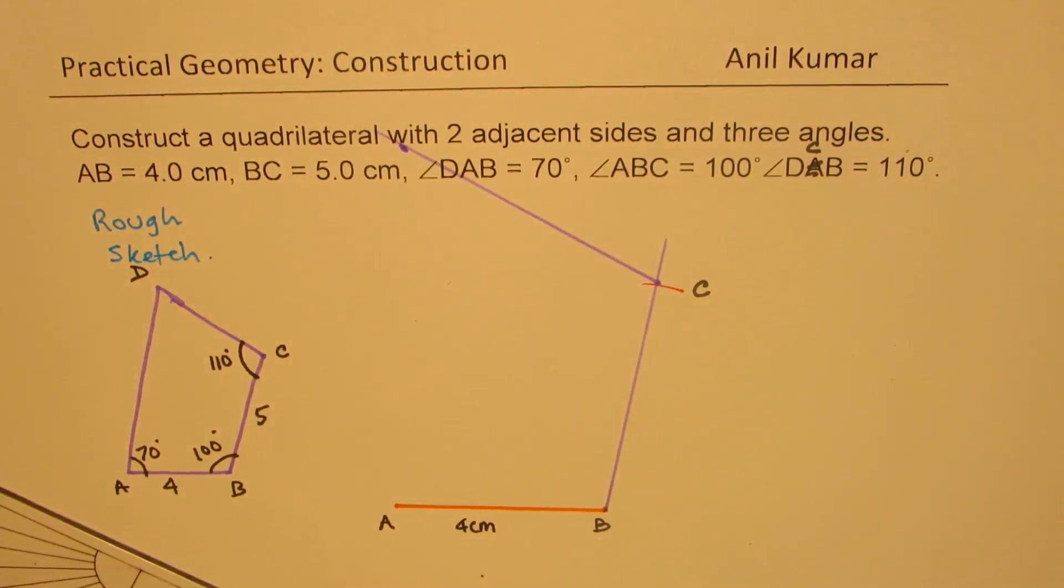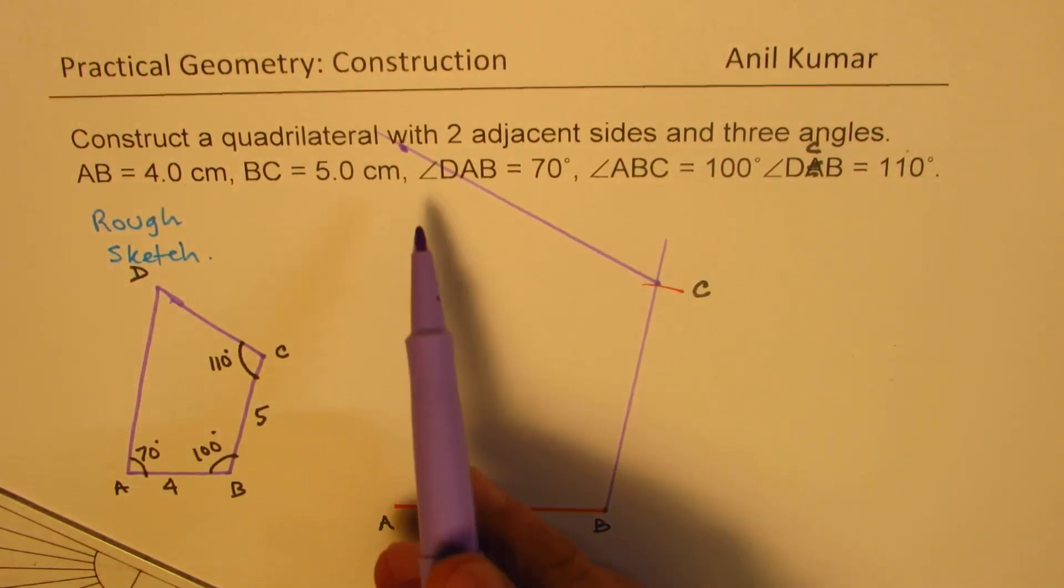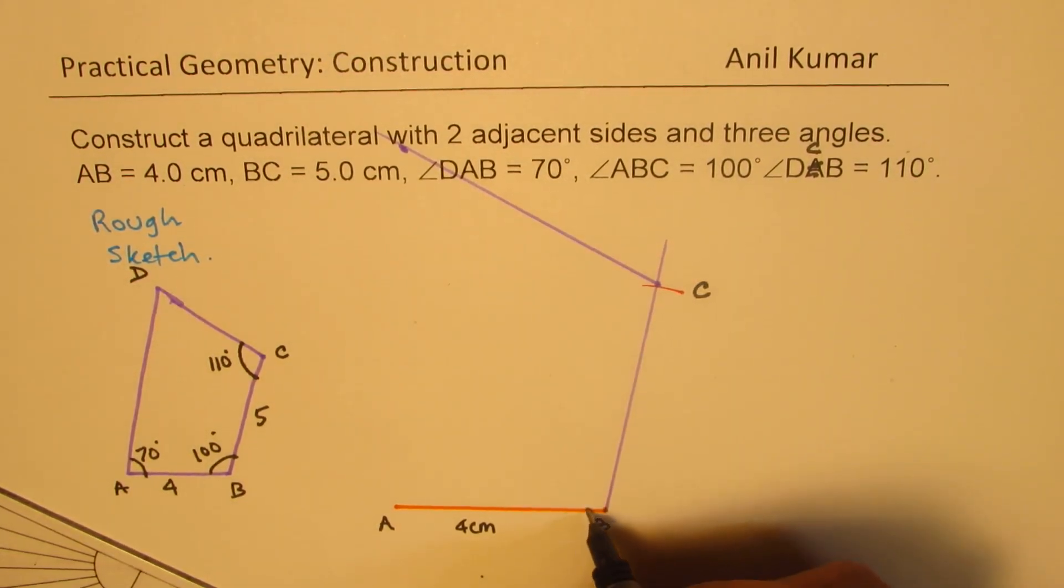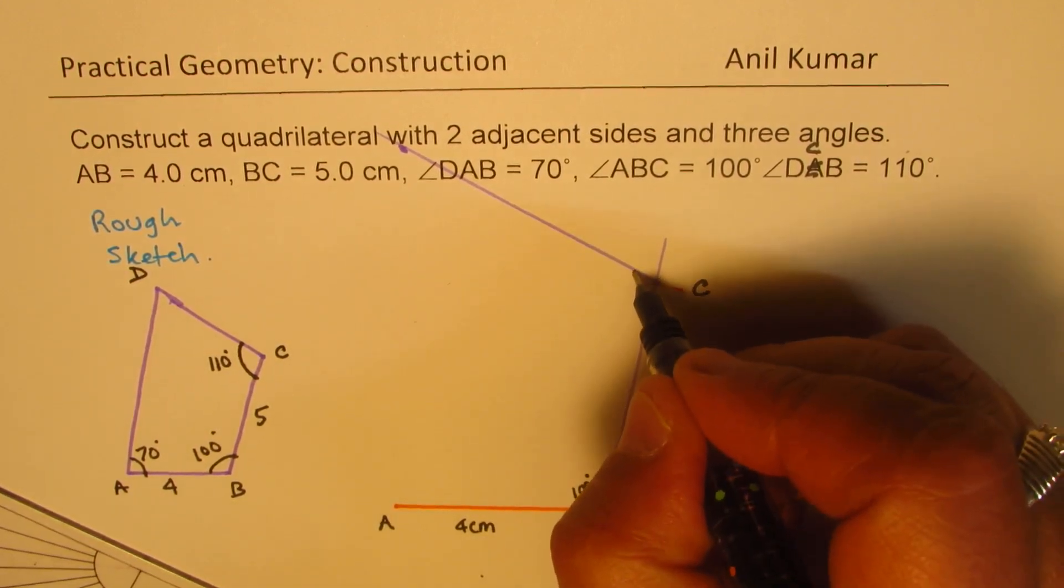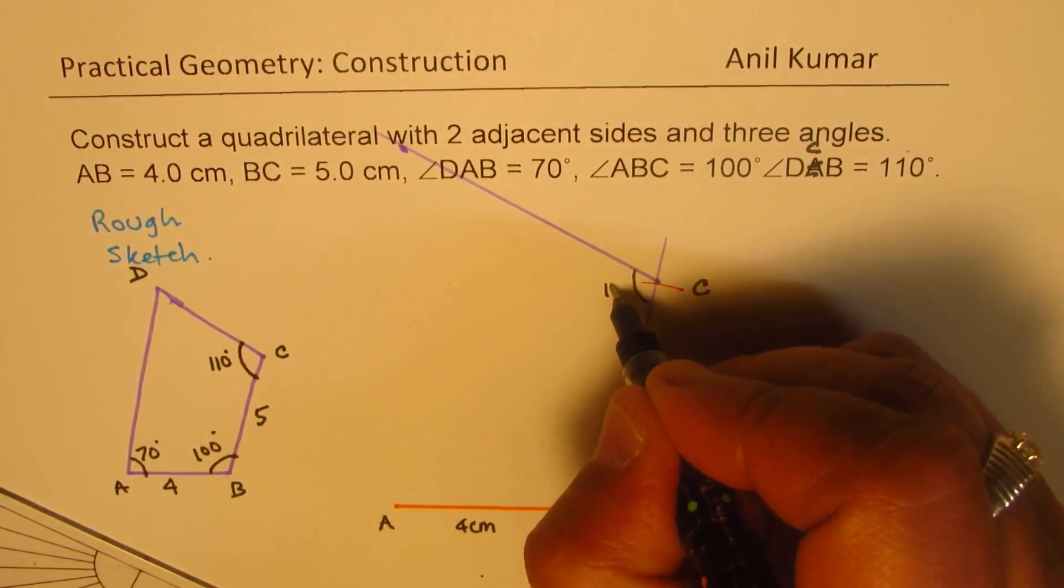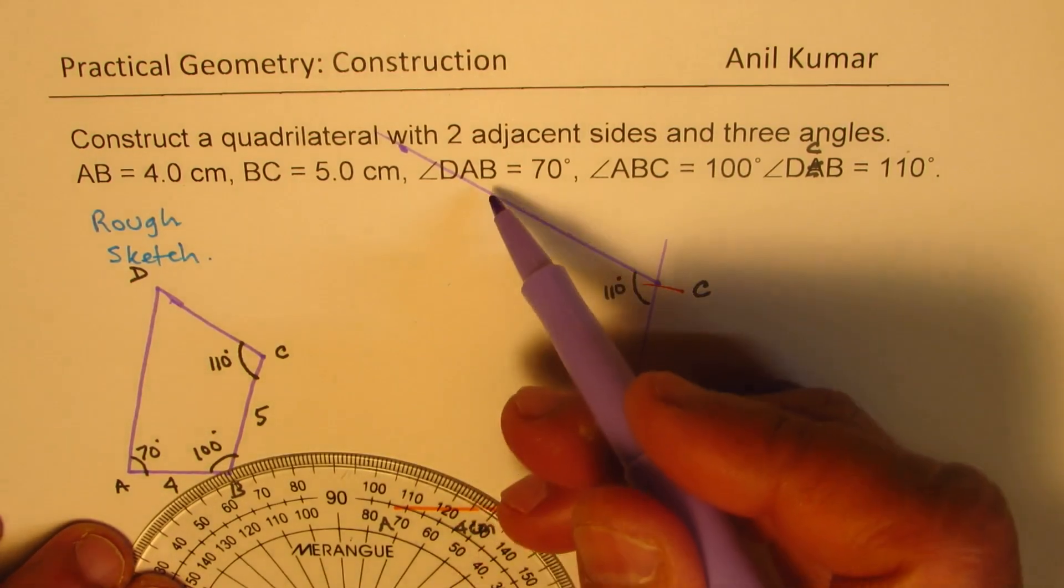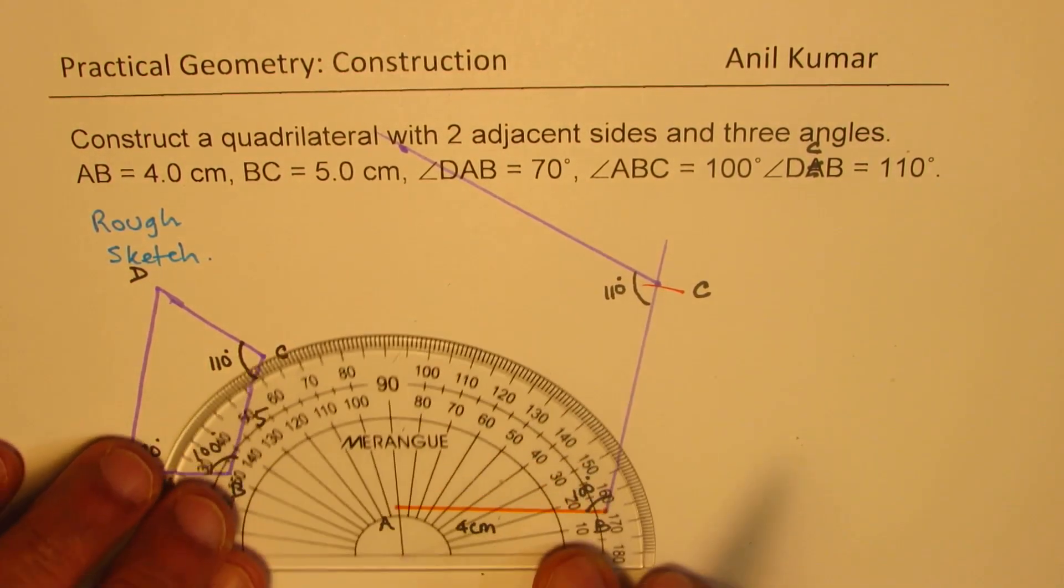And on this, we have to have a point of intersection with 70 degrees from A. So what we have just constructed here is earlier we did 100 degrees. This time we did this as 110 degrees. And now we are going to make 70 degrees from A and extend that line to intersect at D.